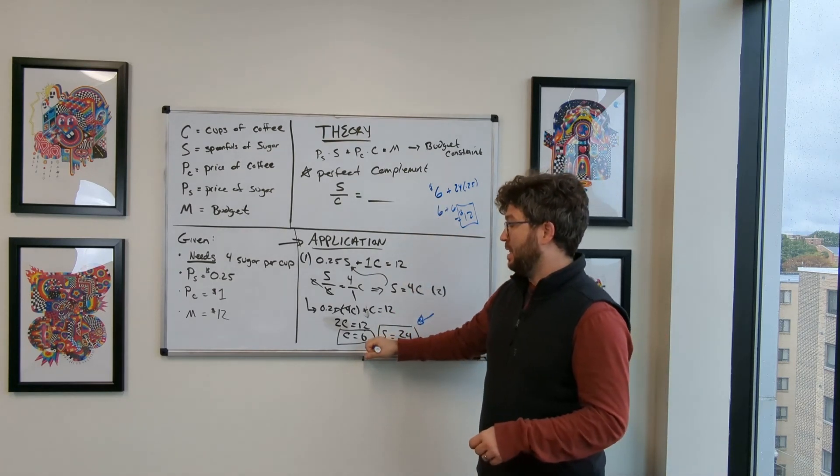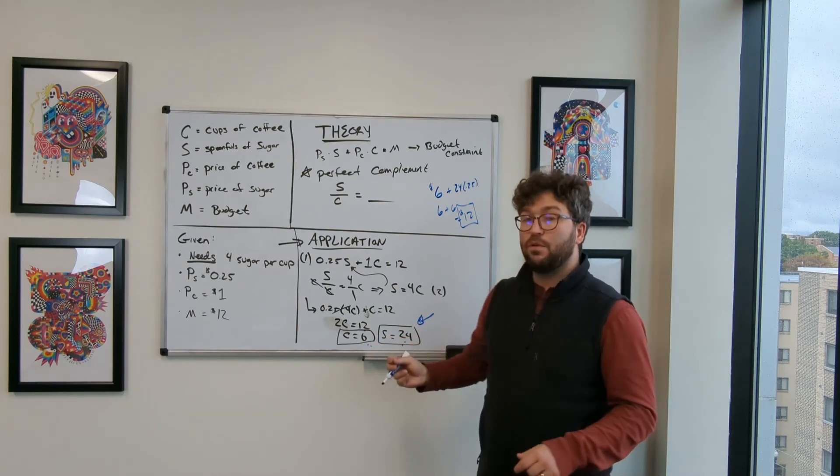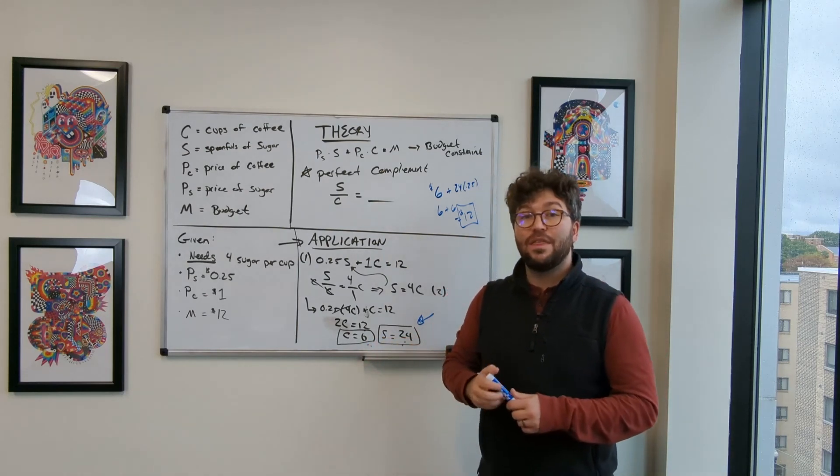We spend all of our money. So that means these two numbers, six cups of coffee and 24 spoonfuls of sugars will solve this problem.